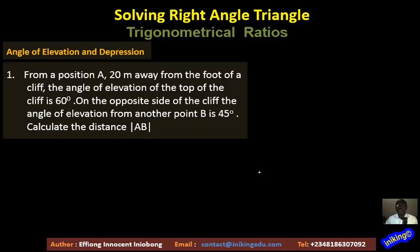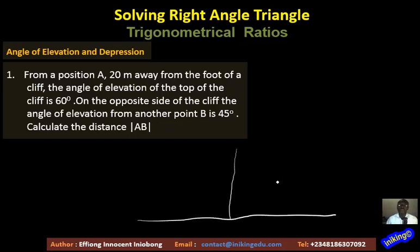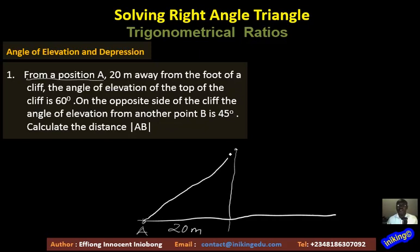Let's have a rough sketch. We have a cliff — just a straight line — and this is our horizontal ground. From the point A on this ground, which is 20 meters away from the foot of the cliff, the angle of elevation of the top is 60 degrees. From position A, we elevate our eyes through 60 degrees to sight the top of the cliff.